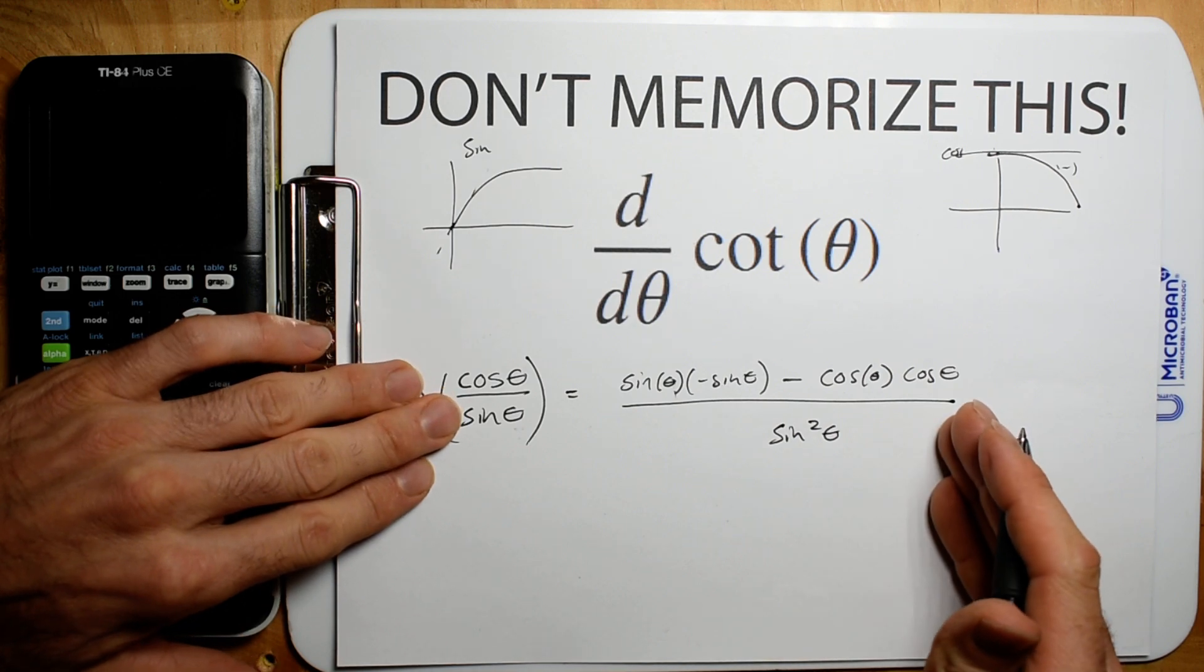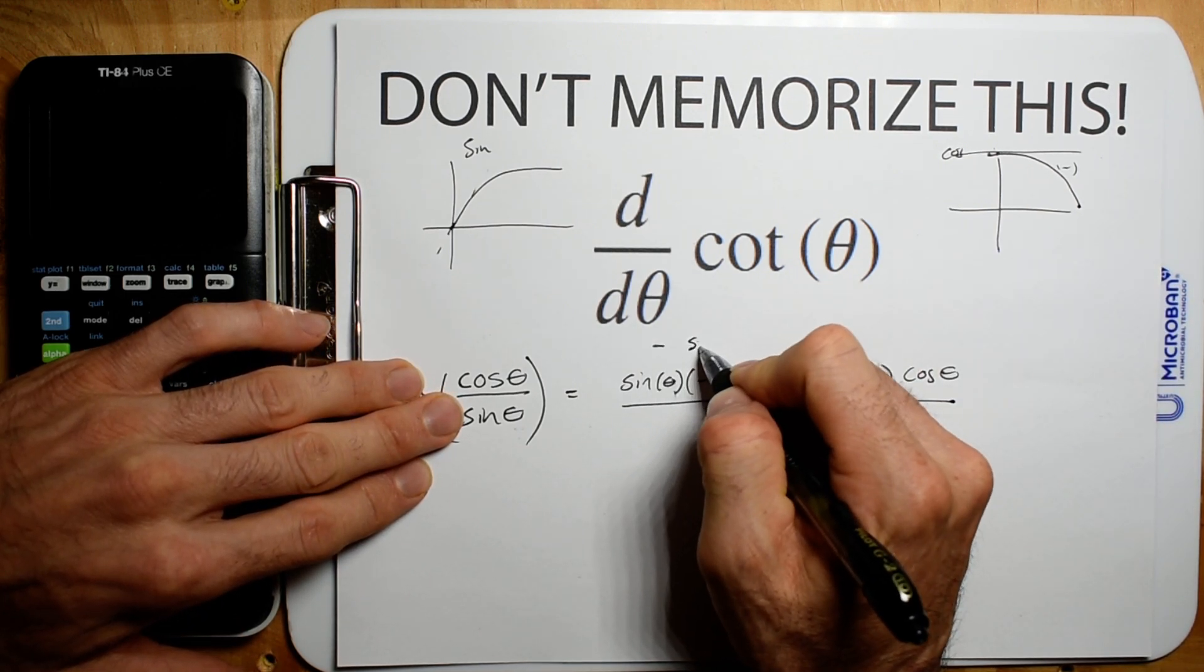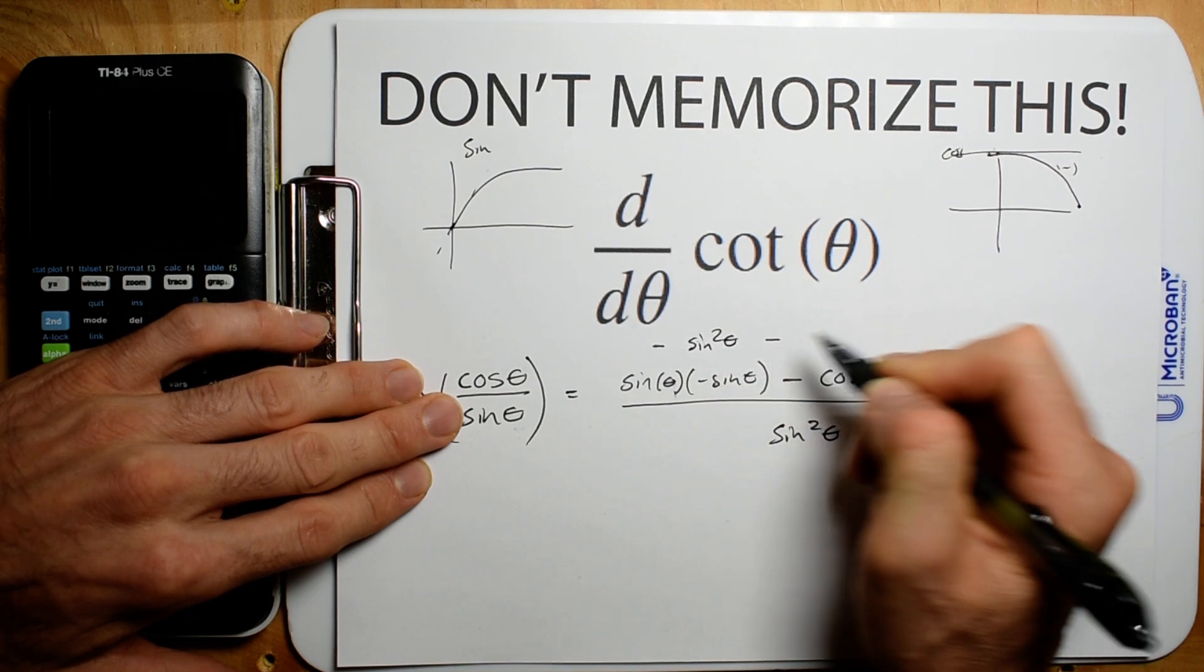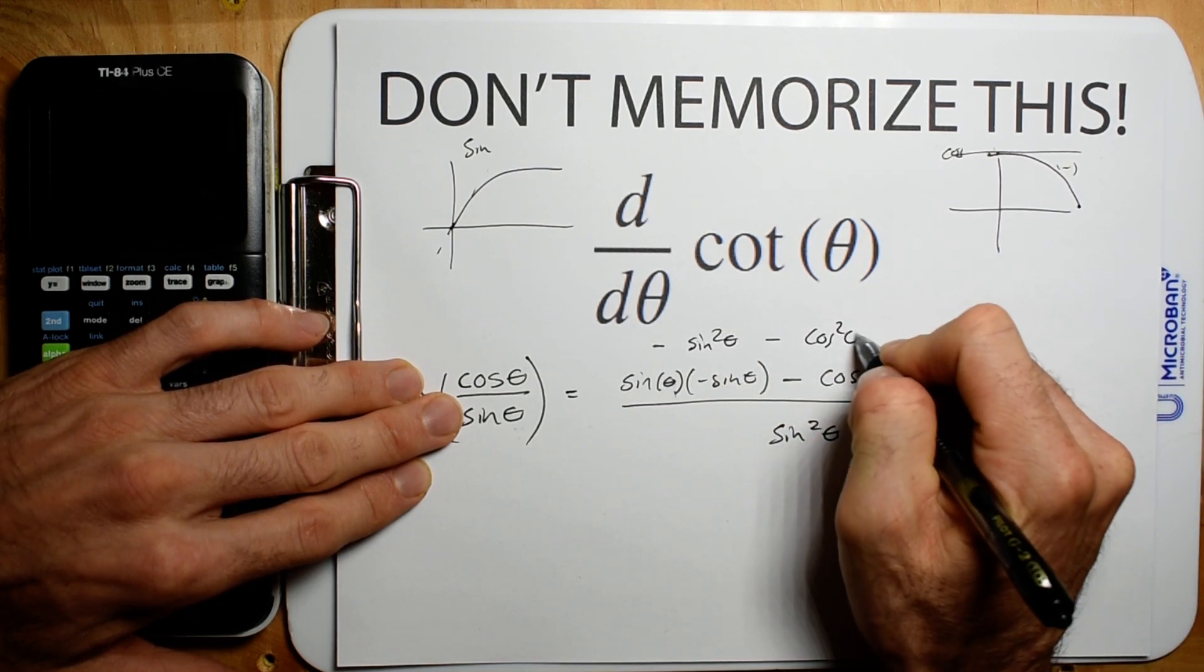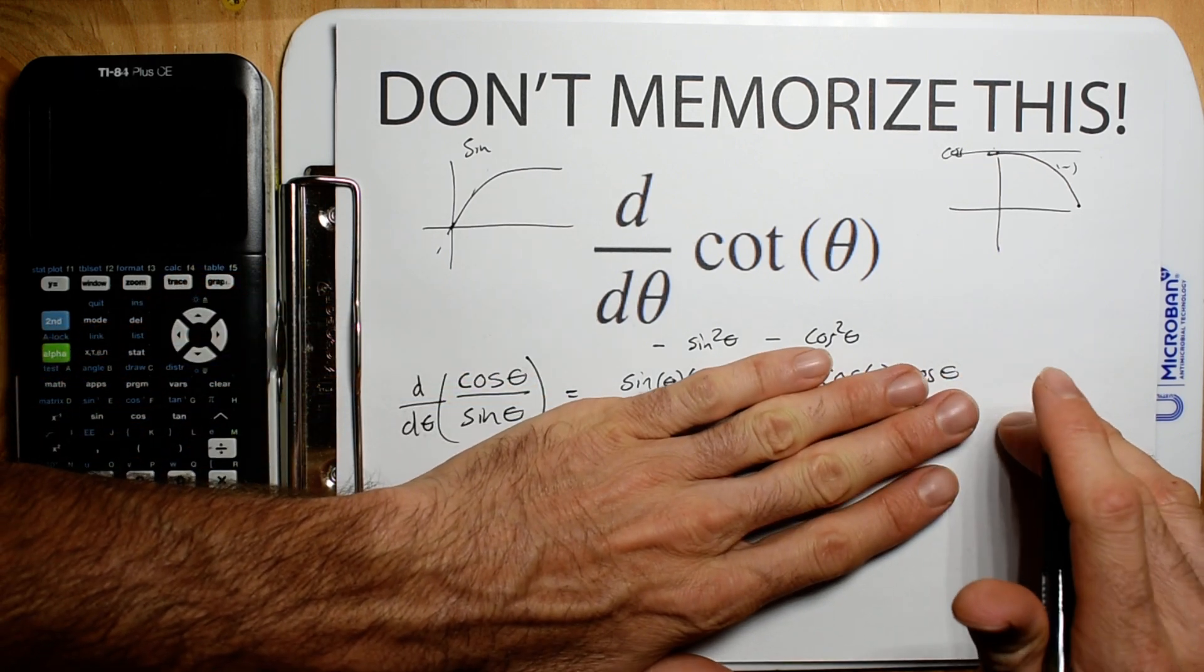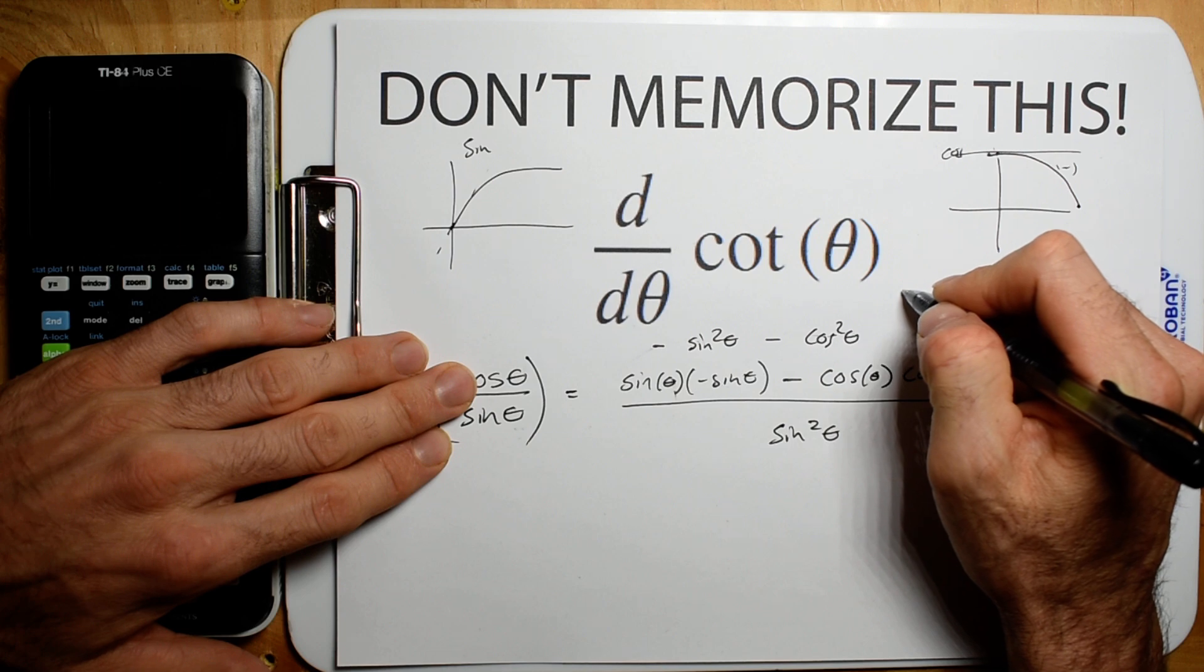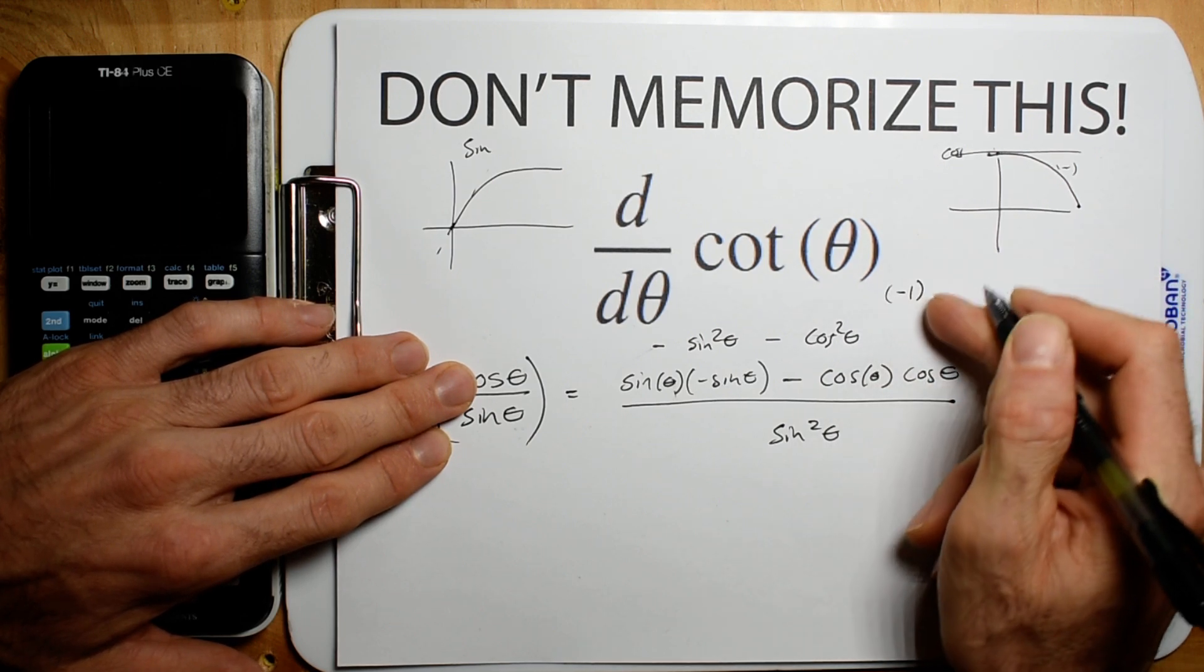Now this one's a little bit tricky. Not too bad. So we have a negative sine squared theta minus cosine squared theta. Now I will give you a little piece of math. This helps me all the time with negatives. Instead of writing it like this, rewrite this. Say this is negative 1. And then bracket it in.